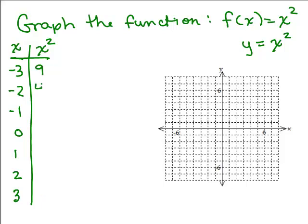You should get 9, 4, 1, 0, 1, 4 and 9. So let's graph these seven ordered pairs. Negative 3, 9, negative 2, 4, etc. Put the video on pause and try this on your own graph paper. You want to be as accurate as possible.